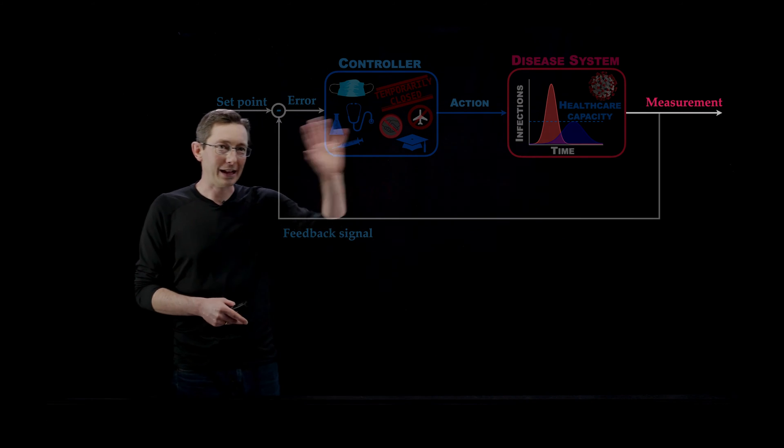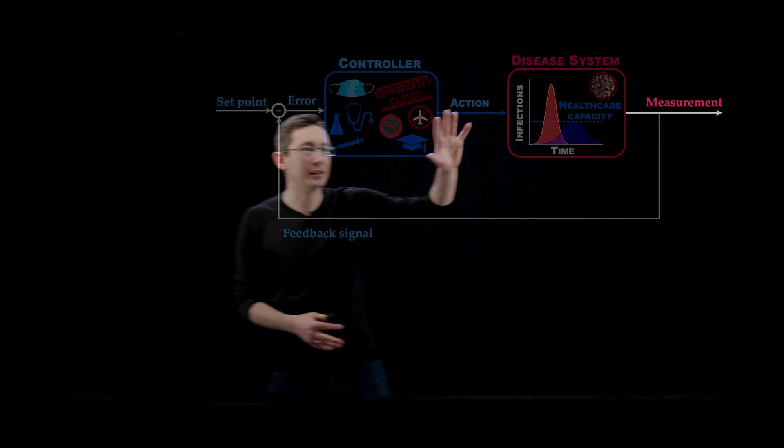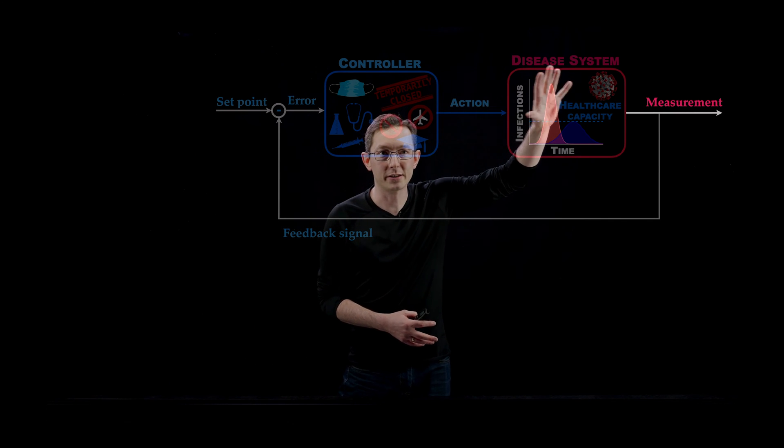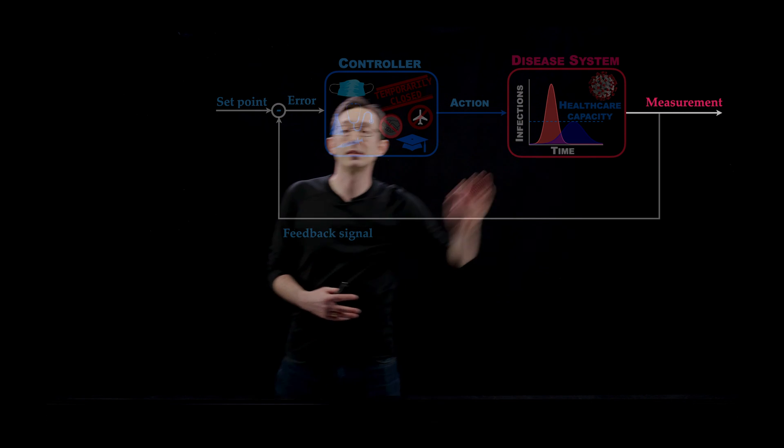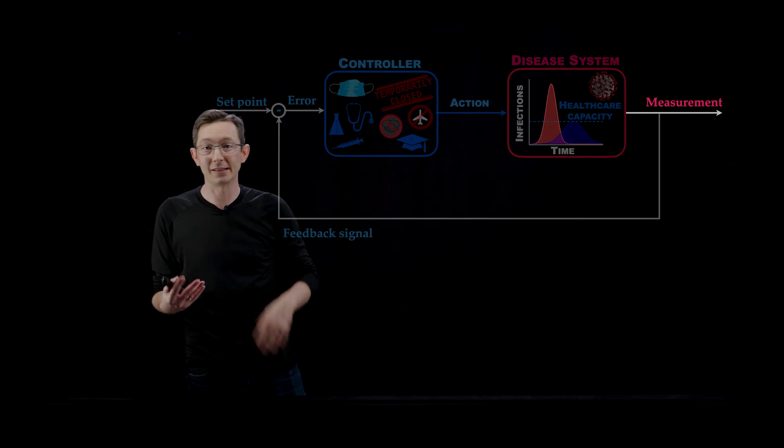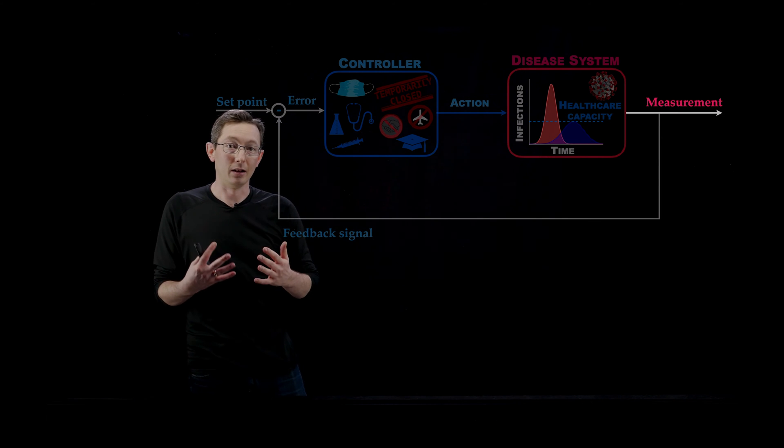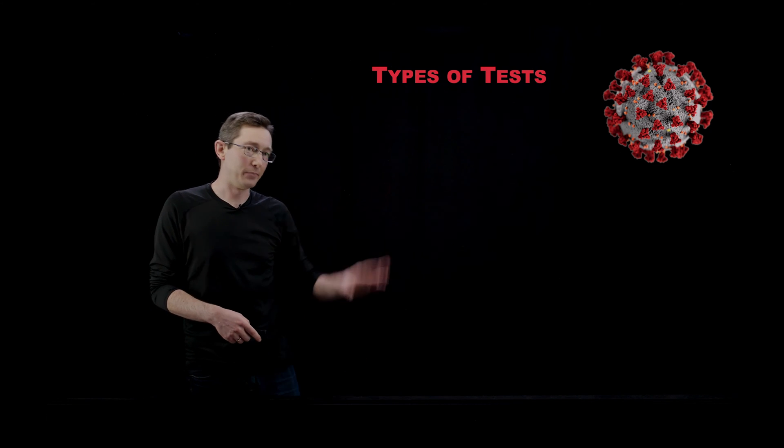We know that we have imperfect models. We are not exactly sure how effective our controllers are going to be. So we absolutely rely on our measurements of our system to see how the actual system is responding.